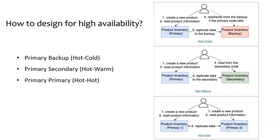Here I will discuss how to turn a single-node product inventory into a double-node architecture with high availability. The first option is primary-backup structure: the backup node is just a standby, and data is replicated from primary to backup. When the primary fails, we need to manually switch to the backup node, so the backup node might be a waste of hardware resources at other times.